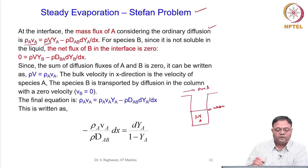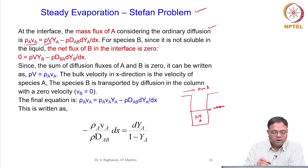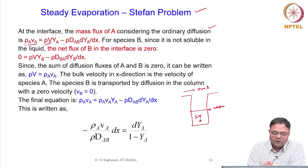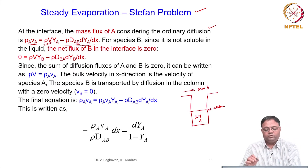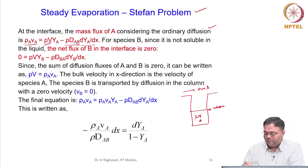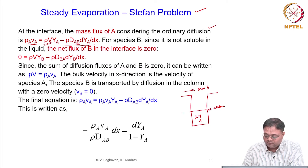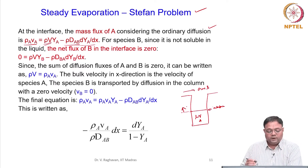This is the bulk convection: rho * V * Y_A, plus the diffusion flux rho * D_AB * dY_A/dx. At the interface, Y_A will be higher and when you go upwards — that is, x is in the upward direction — Y_A will be decreasing, so this gradient is negative.